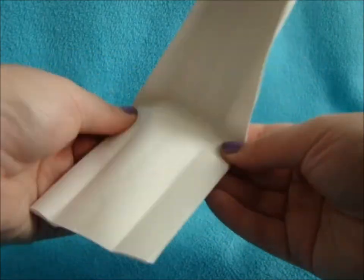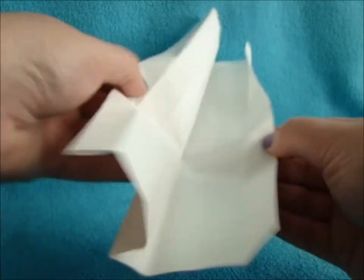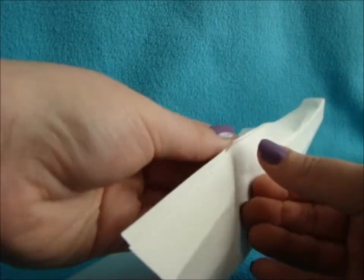Once you have your paper all folded, you're going to unfold it. As you can see, we have our lines that we're going to follow while cutting out our strips.